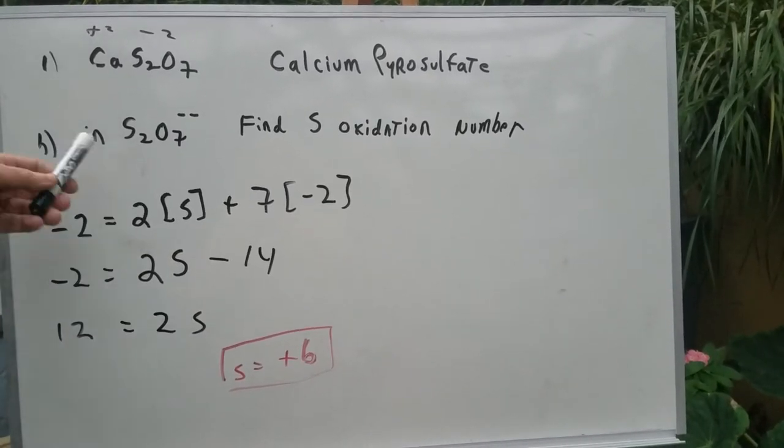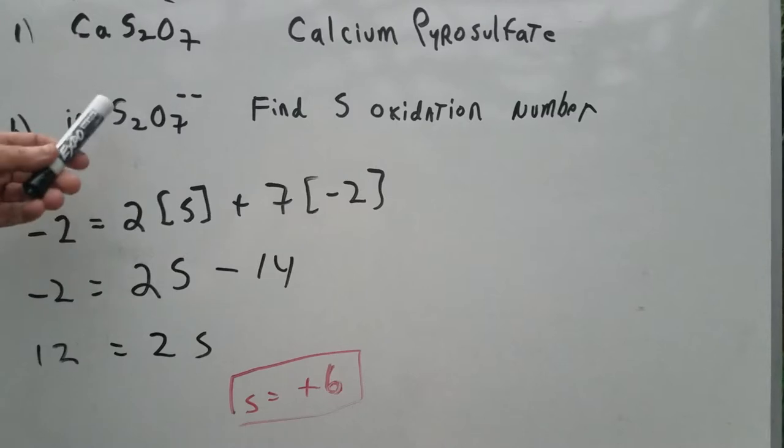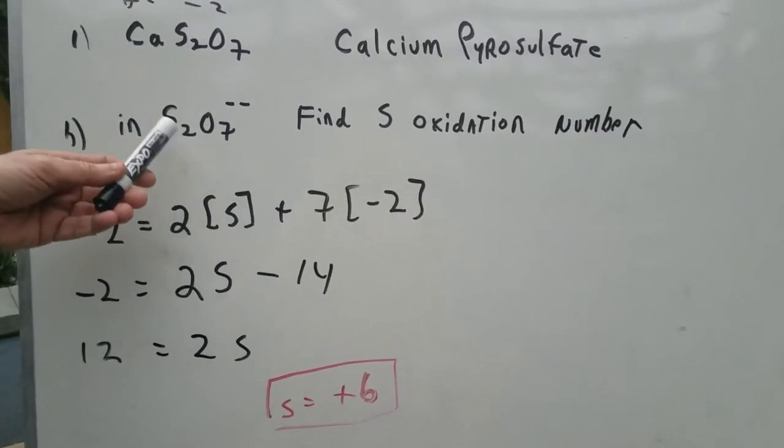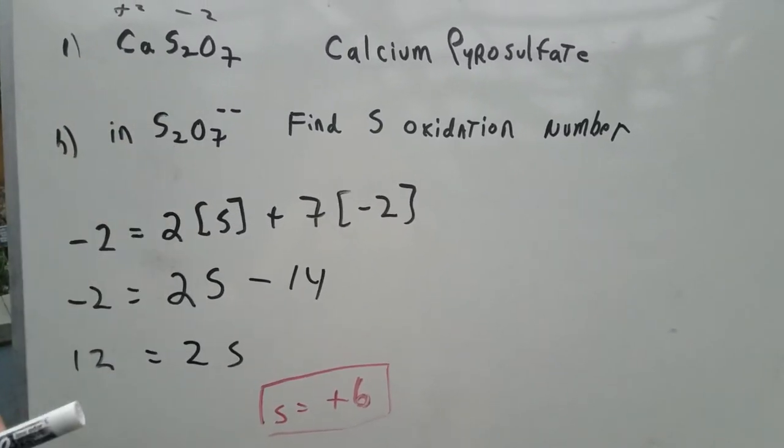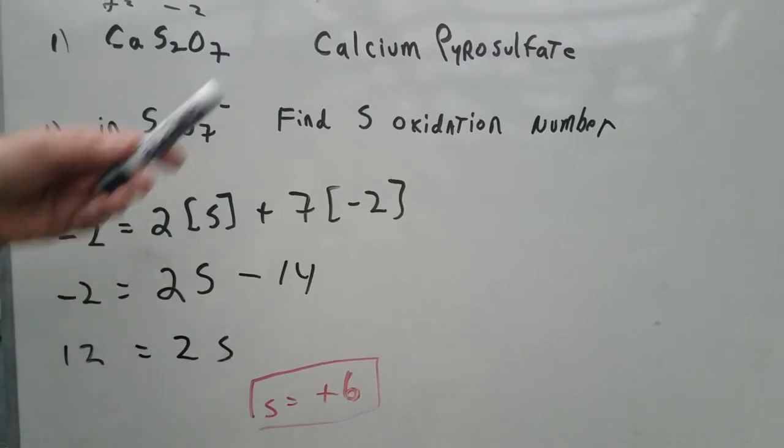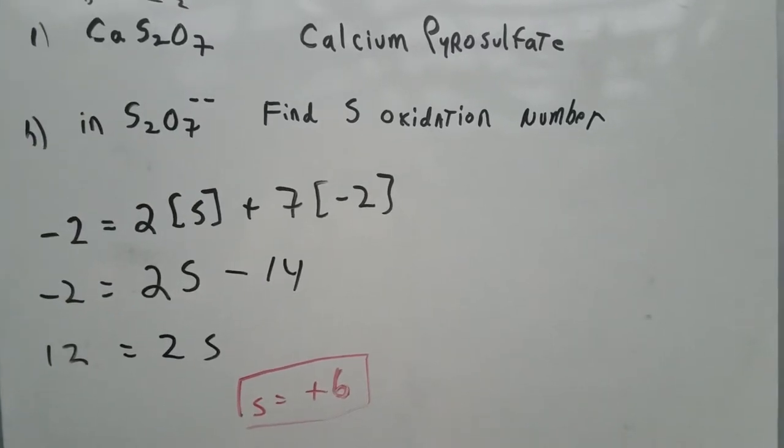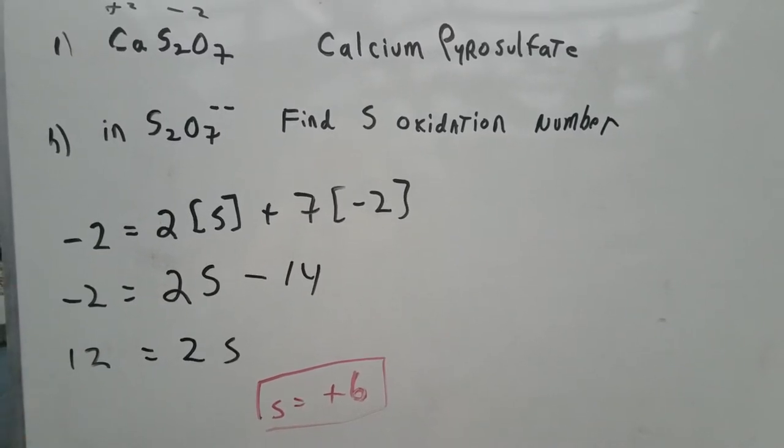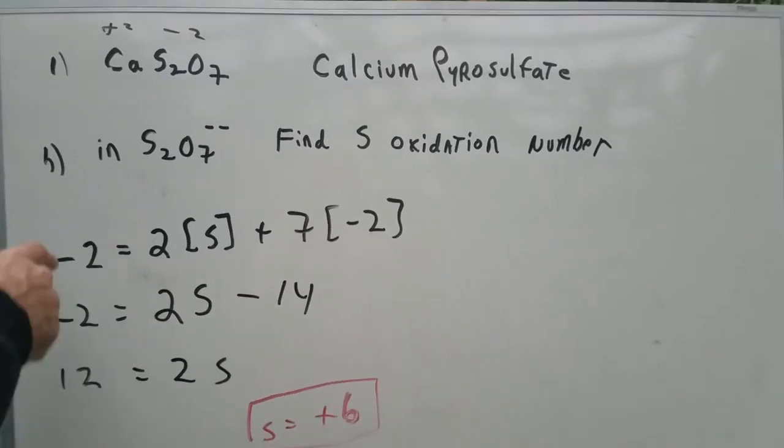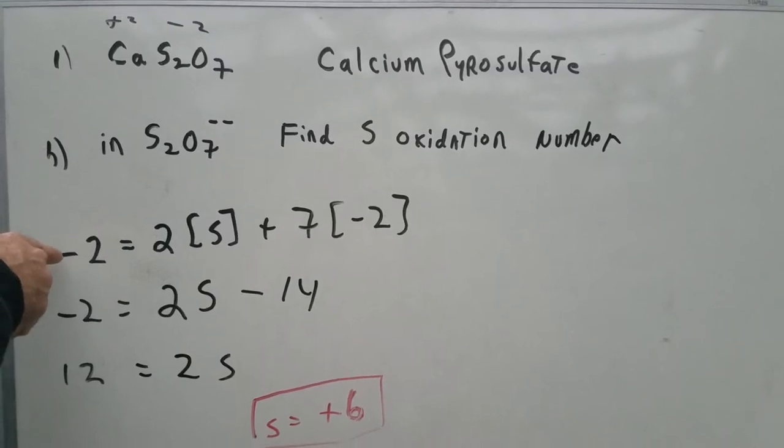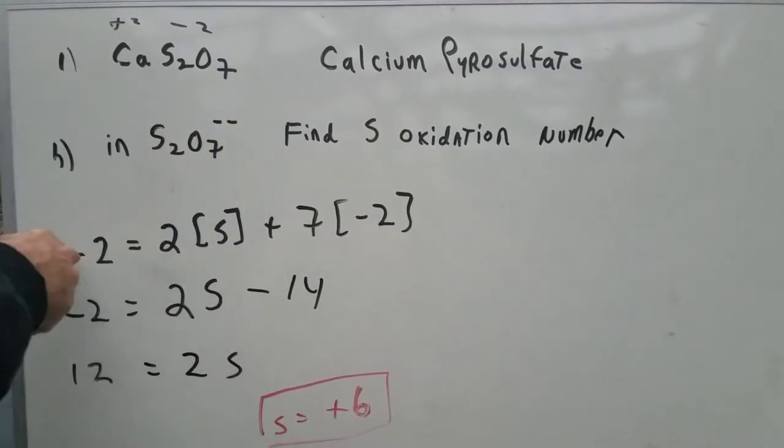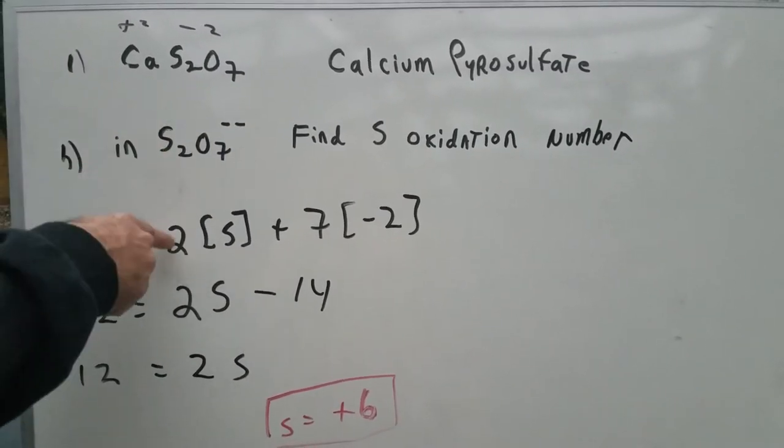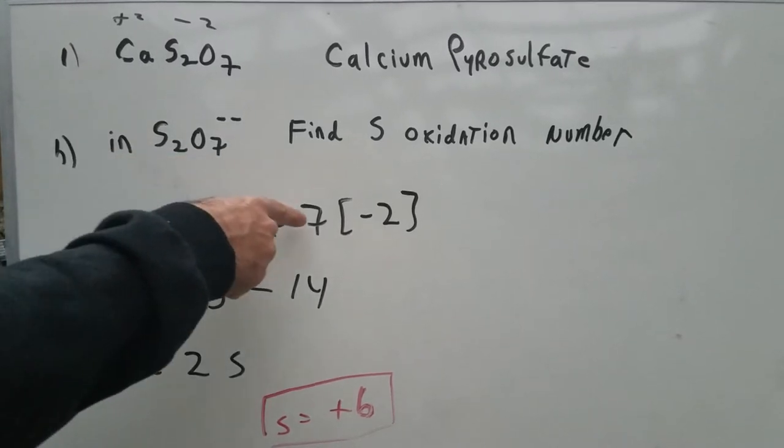Okay, part B, now that we know that the charge on the anion is minus 2, I say to you, in the pyrosulfate anion, what's the oxidation number on the sulfur? The best way to do this is to set up what I call a mini formula, as I show in the DAT destroyer book. And I say that the total charge, which here is minus 2, is equal to the charge on 2 sulfurs plus 7 oxygens.